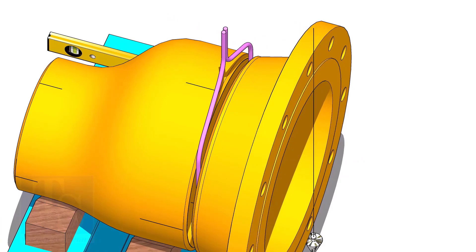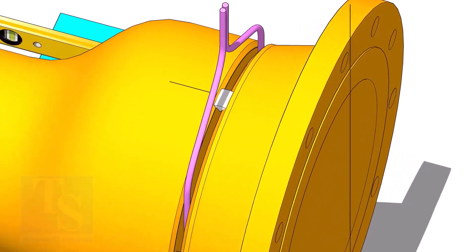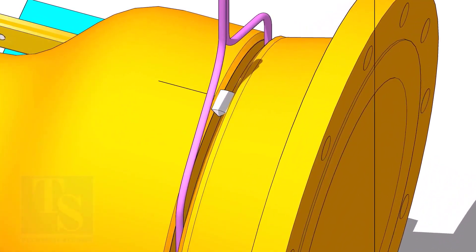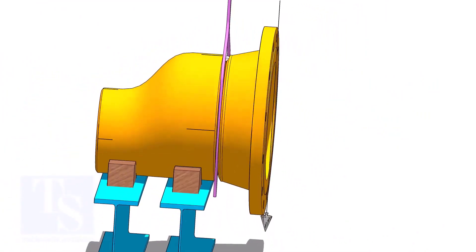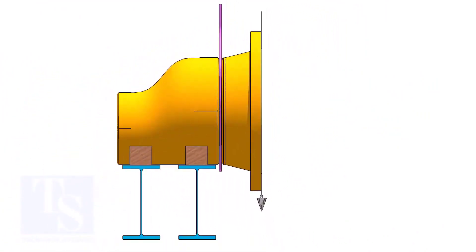Tack weld on the top side of the joint. Check the vertical plumbness, if correct, tack weld at the bottom side.